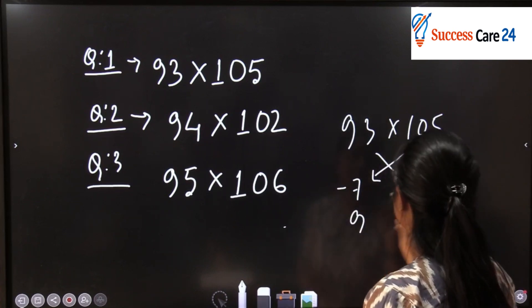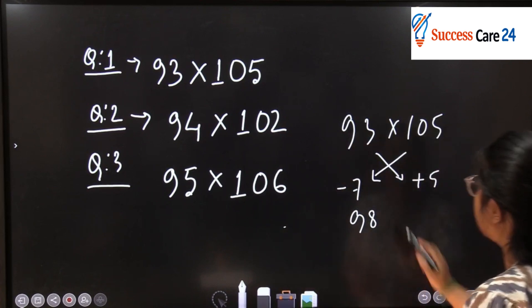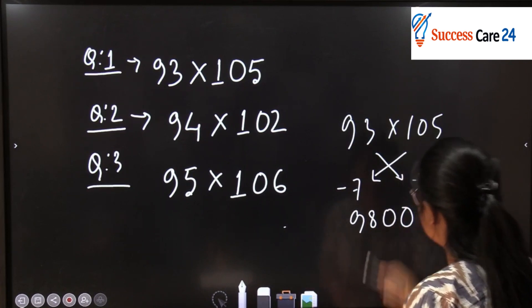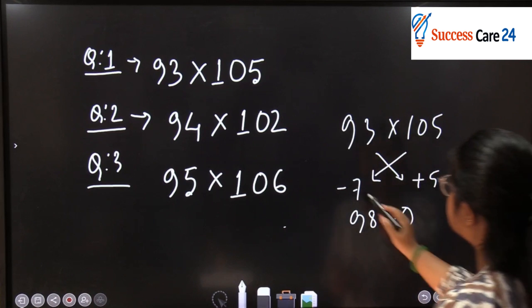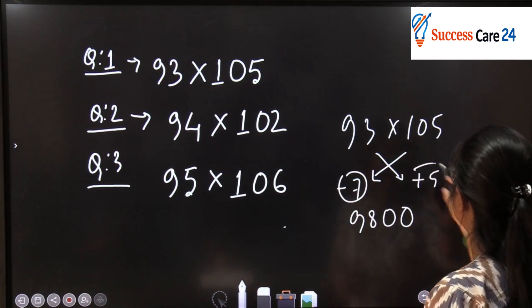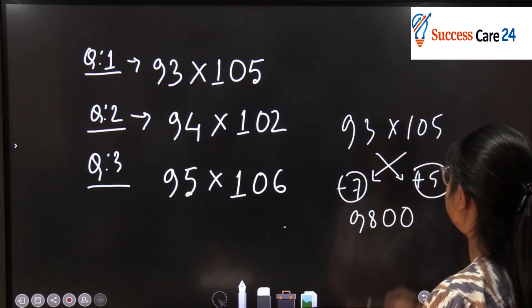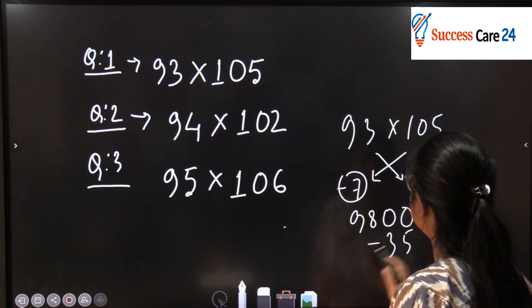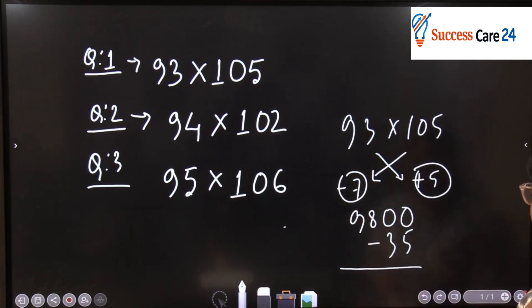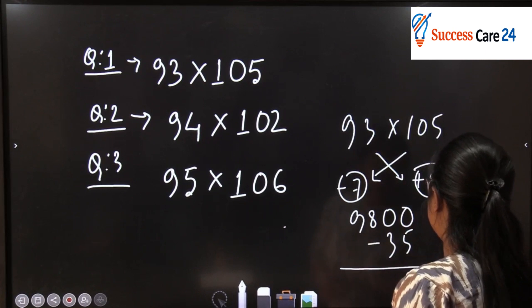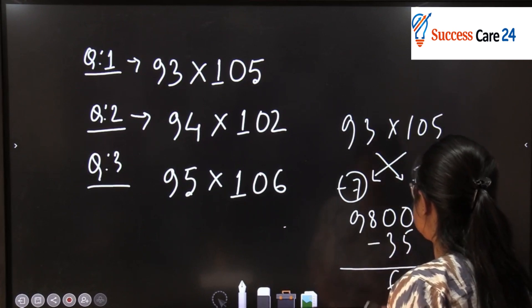The value will be 98. Now what you do? Put two zeros here. And here, minus 7 into 5. That is 35. Subtract it from 9800.